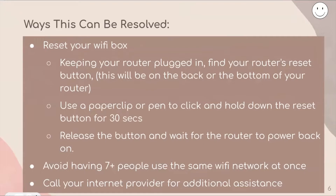You can also reset your Wi-Fi box. Keeping your router plugged in, find the reset button on the back or bottom of the device. Use a paperclip or pen to click and hold the reset button for 30 seconds, then release it and wait for the router to power back on. Additionally, avoid having more than seven people use the same Wi-Fi network at once, and call your internet provider for additional assistance.